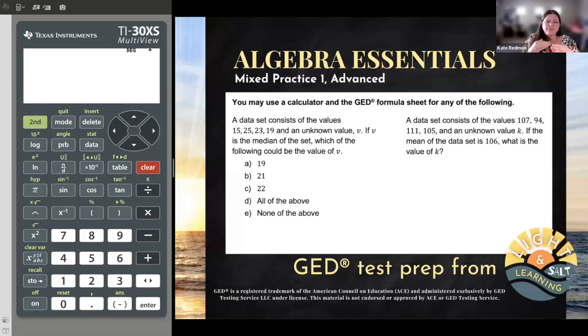So first example: a data set consists of the values 15, 25, 23, 19, and an unknown value V. This is why it's coming up in algebra - an unknown value V. If V is the median of the set, we know something about V, it's the median.